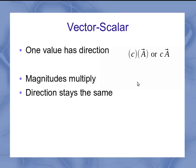When I do this kind of vector scalar multiplication, the rules are that the magnitudes multiply, but the direction stays the same. So both our number c and our vector a have a magnitude, and those two things are going to multiply.